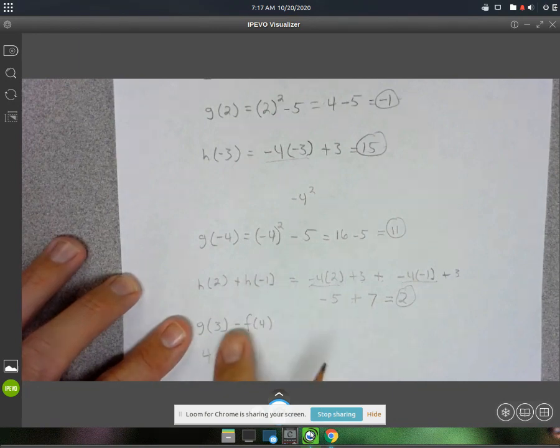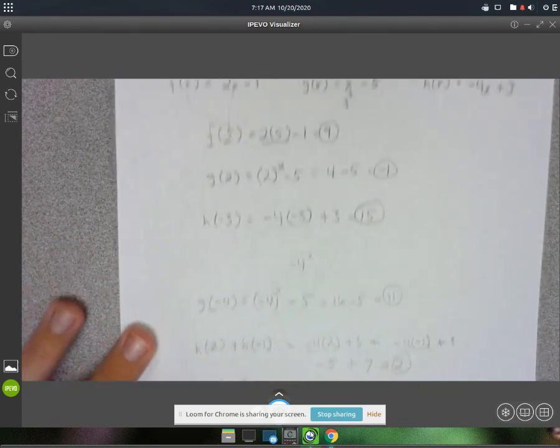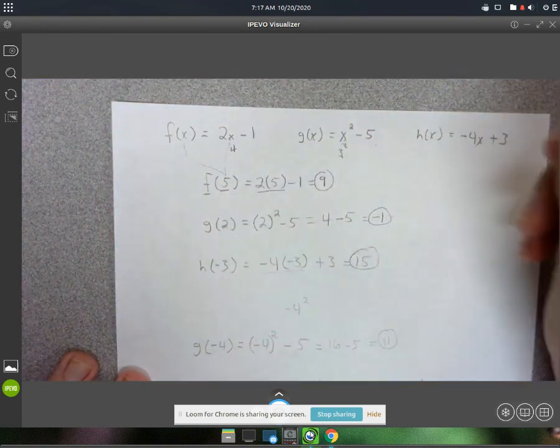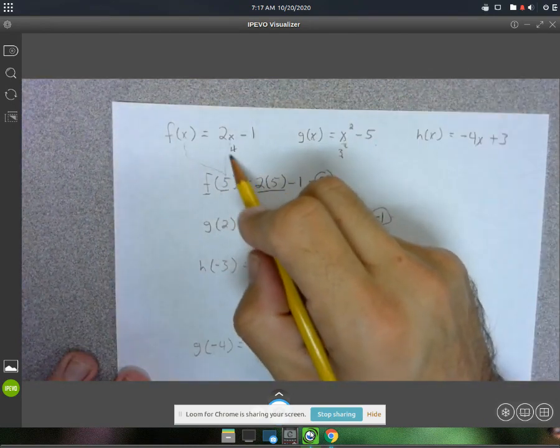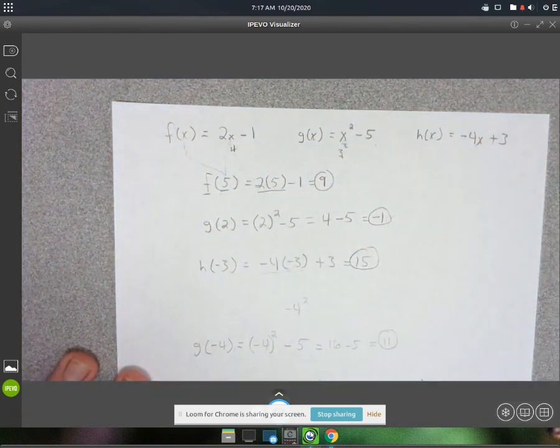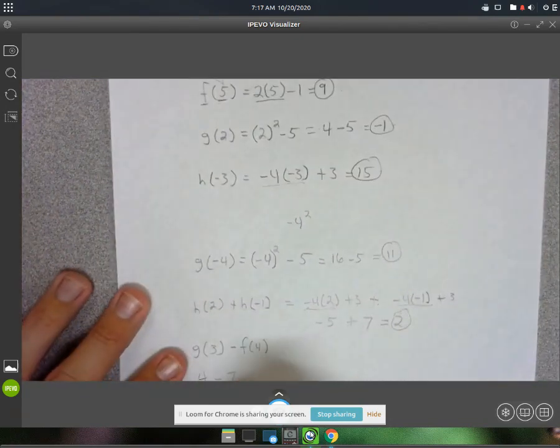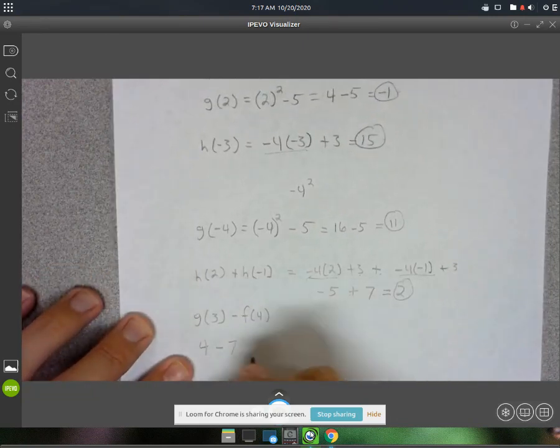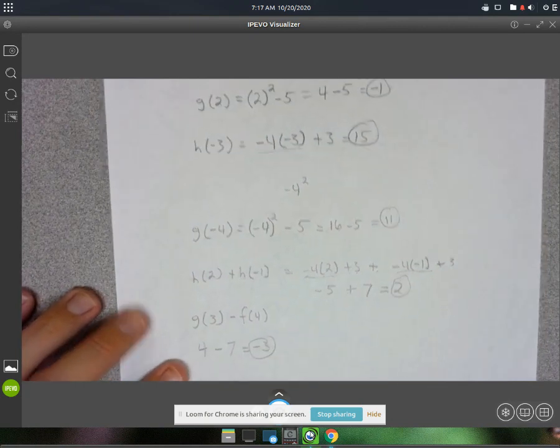And then minus. Alright, then next we'll do f of 4. So we're plugging in 4 for x. 2 times 4 is 8. And then 8 minus 1 is 7. And then we'll just subtract those two. 4 minus 7 is negative 3. And that's all.